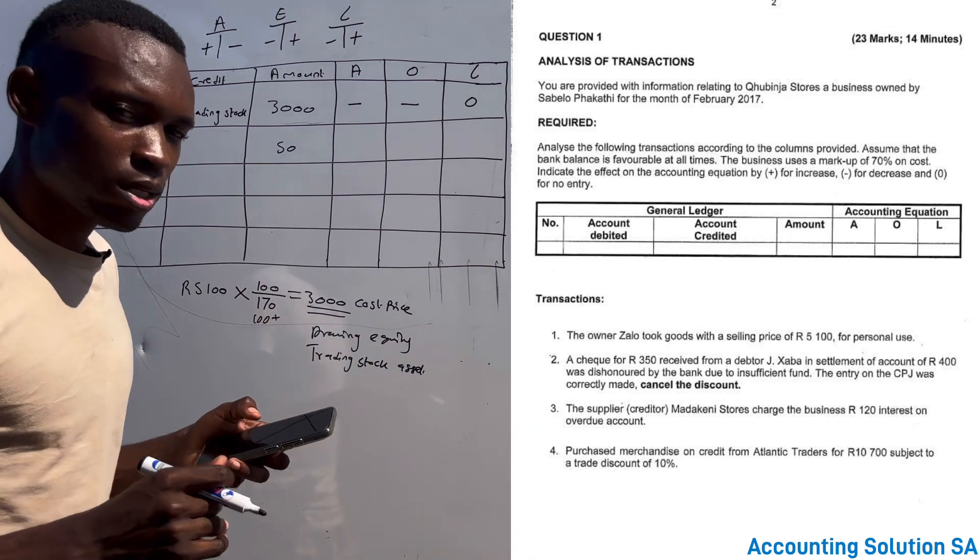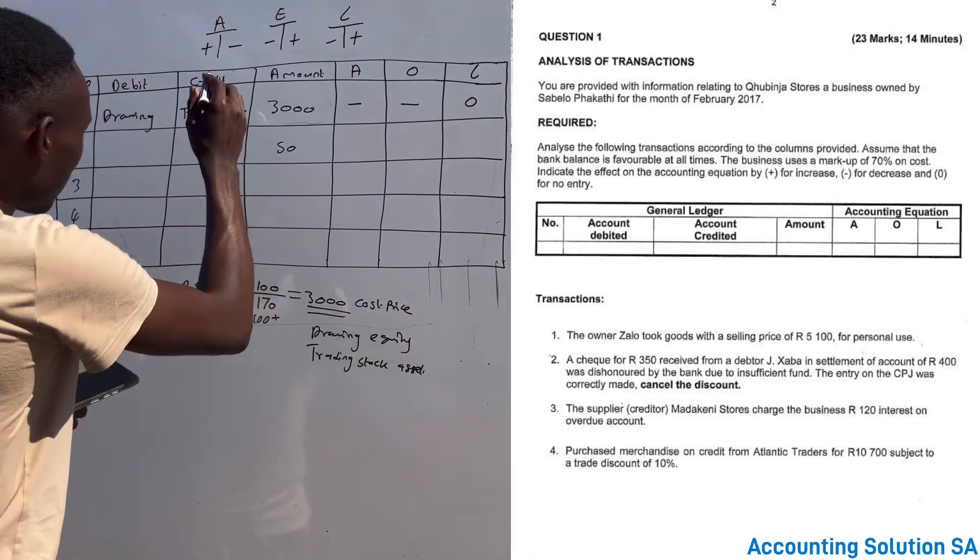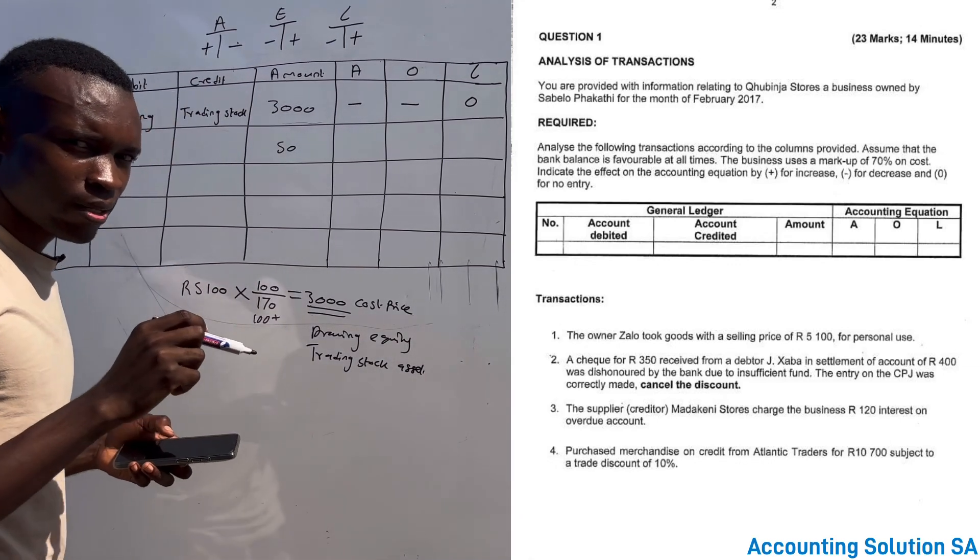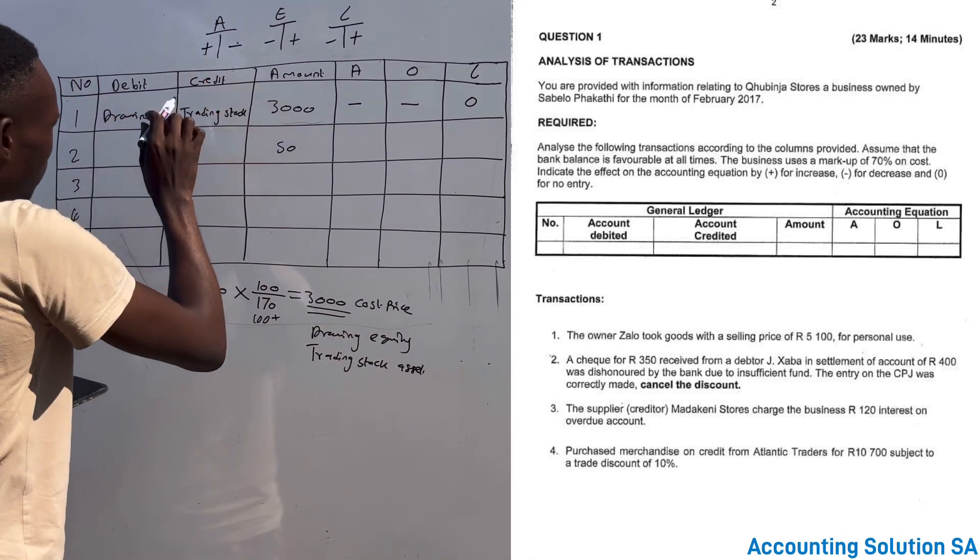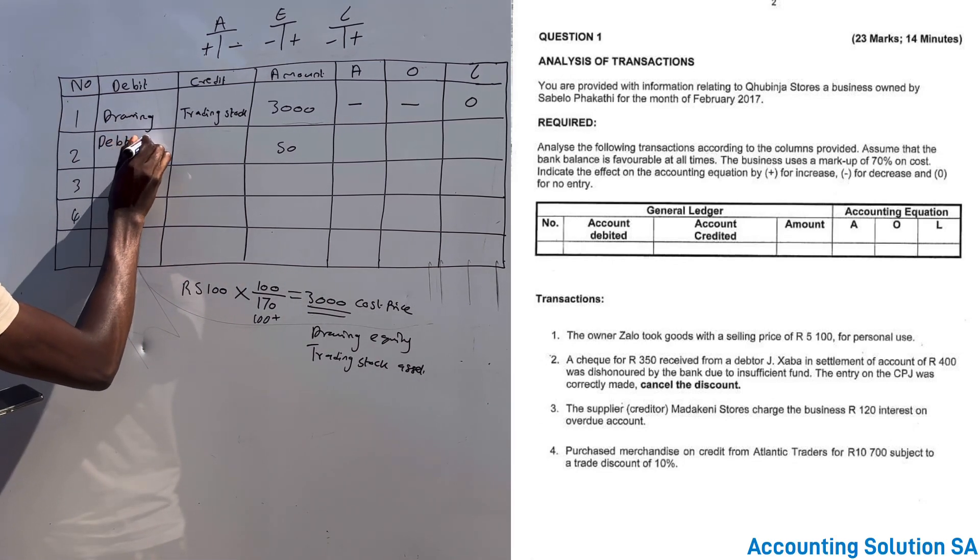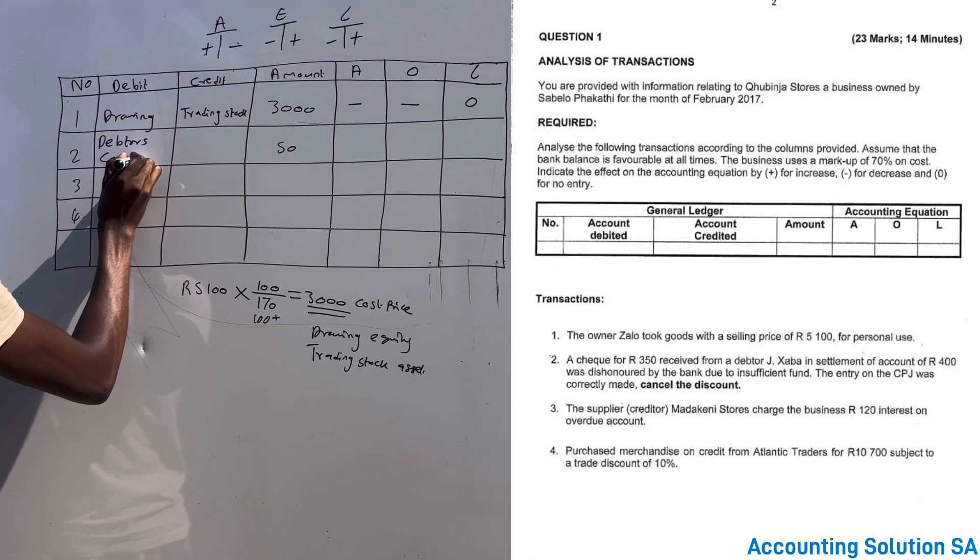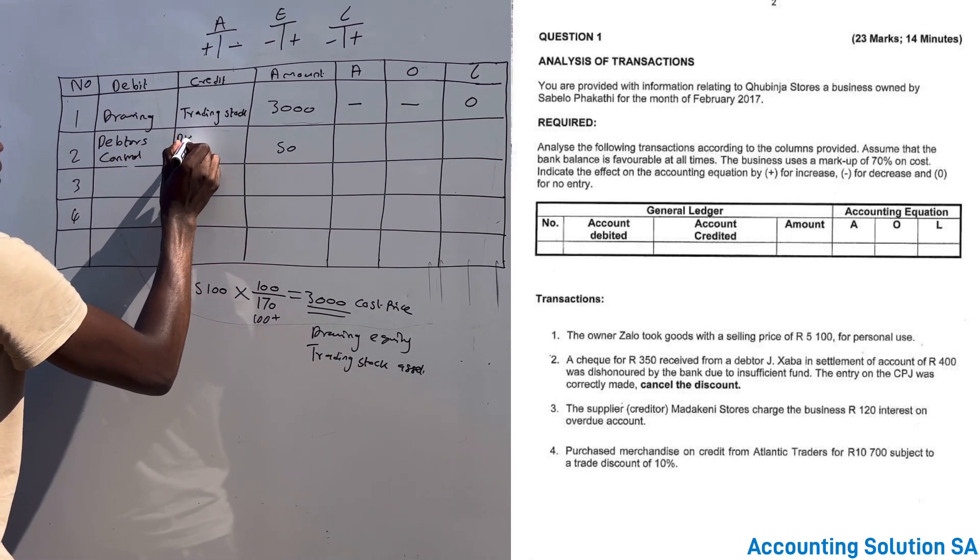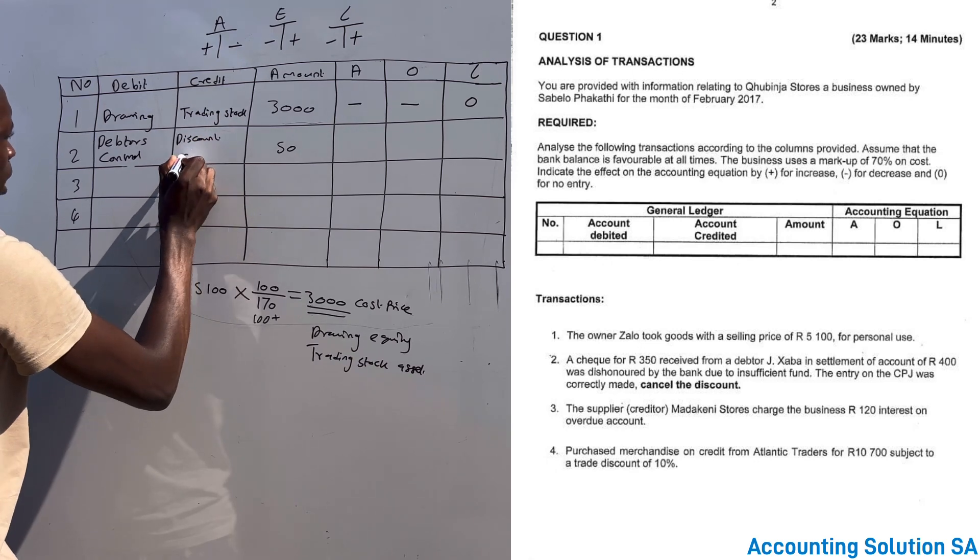So how do we cancel the discount? Obviously now we have to reverse backward, and the debtors control that we subtracted and the bank rejected, the discount which means that now we have to add back. Debtors control, and we credit discount allowed.